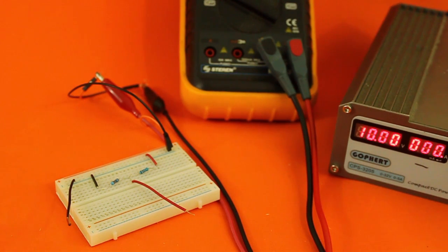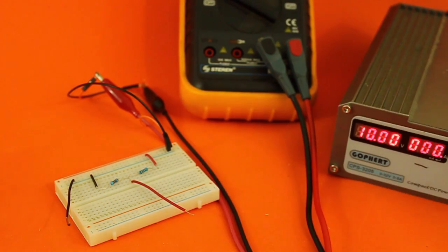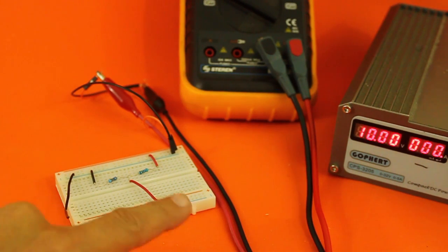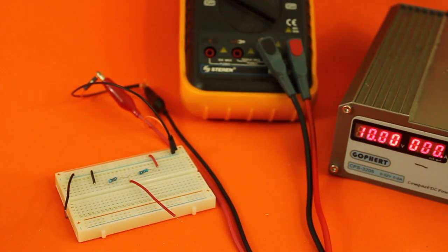Voltage dividers have multiple applications. For example, to measure high voltages. Normal multimeters can only measure up to 600 volts. But if we want to measure higher voltages, we cannot use them. So we can design our voltage divider to have an output voltage of 10% the input voltage in such a way that if we measure, for example, 80 volts at the output, we will know that the real voltage is 800 volts.